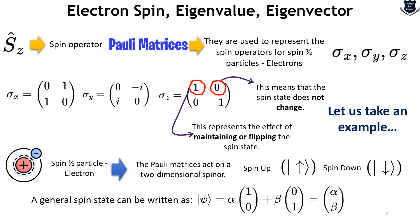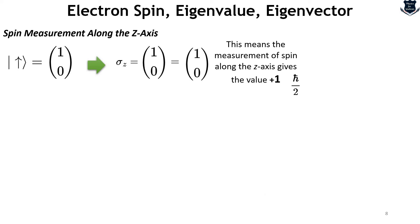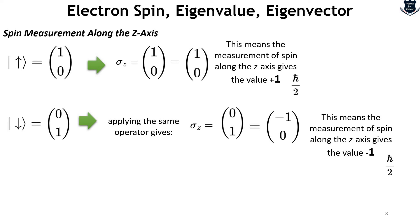Now let us take a very simple example walkthrough to show how we actually use this to measure the spin — that is the objective of today's video. First, we will measure the spin along the Z axis. Let us say the electron in the spin-up state would be represented as (1, 0). If we apply the S_z operator — we are measuring the electron spin along the Z axis — we get a result showing that the measurement of spin along the Z axis gives a value of plus 1, which is positive ℏ/2, the reduced Planck's constant. Now if the electron spin is in the down state, which is (0, 1), applying the same operator gives a measurement of minus 1, which is a unit of -ℏ/2.